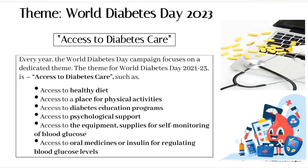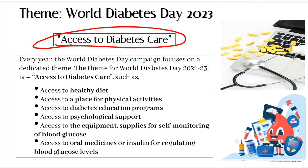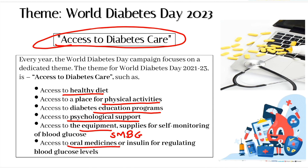Now discussing the theme for World Diabetes Day. Every year the World Diabetes Day campaign focuses on a specific dedicated theme. The theme for World Diabetes Day 2021-2023 is Access to Diabetes Care. This includes access to a healthy diet, access to places for physical activities, access to diabetes education programs, access to psychological support for patients with diabetes, access to equipment and supplies for self-monitoring of blood glucose, and access to oral medications or insulin for regulation of blood glucose levels.